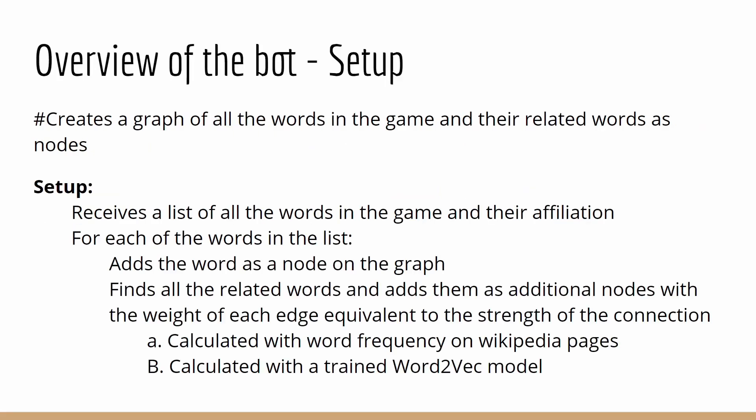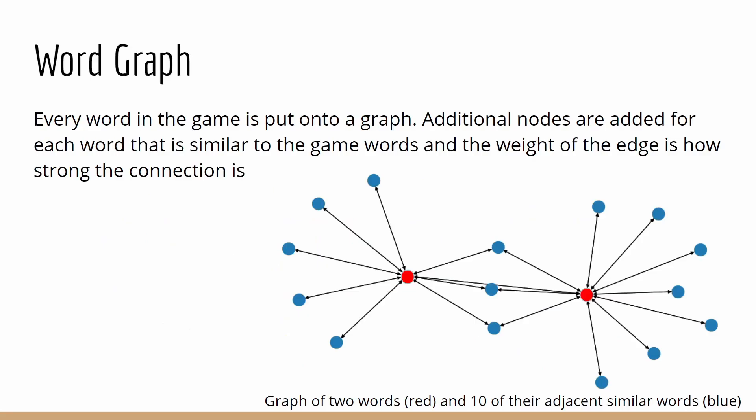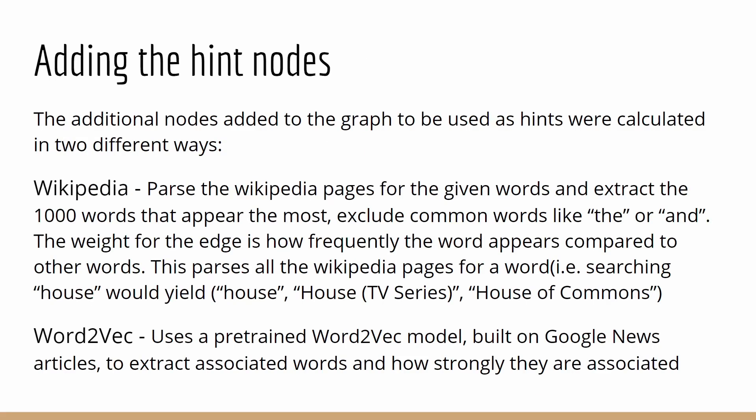This is an overview of how the setup of my bot works. Each word in the game is put onto a graph, and then additional nodes are added to this graph for each word that is similar to the game words, and the weight of these edges is how strong the connection is. I use two different techniques to add these hint nodes. The first is Wikipedia: I parse Wikipedia pages for the given words and extract the 1,000 words that appear the most, and the weight of the edge between this Wikipedia word and the given word is how frequently the word appears in these pages. Next, I also use a word-to-vector model, using a pre-trained model built on Google News articles to extract associated words and how strongly they are associated.